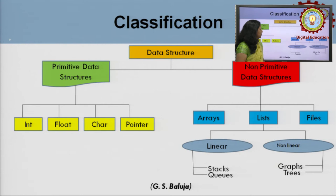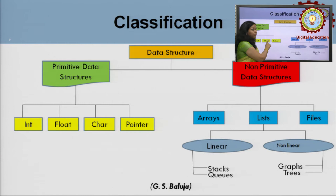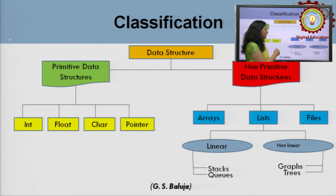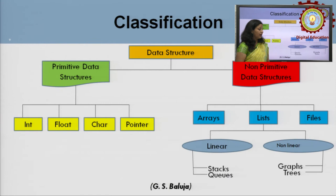This is the diagrammatic representation for the classification. Data structure is divided into primitive and non-primitive. In primitive data structures we see int, float, char, pointer — these are the fundamental data structures of C. In non-primitive data structures, by using primitive ones, we can categorize into arrays, lists, and files. Lists can be further classified into two categories: linear and non-linear. This concept is very important in data structure.